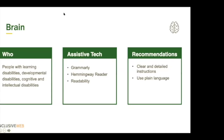Brain disabilities that affect the brain — this could be people with learning disabilities, developmental disabilities, or cognitive and intellectual disabilities. Some assistive technologies they might use are tools like Grammarly and Hemingway Reader, which help with grammar, spelling, and reading. Readability is another one. Recommendations for this group: always make your content clear with detailed instructions. It's never a bad idea to state the obvious — not all of us know what you know. Using plain language goes a long way: shorter sentences and more common words.